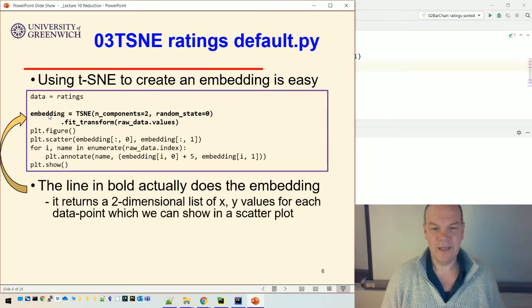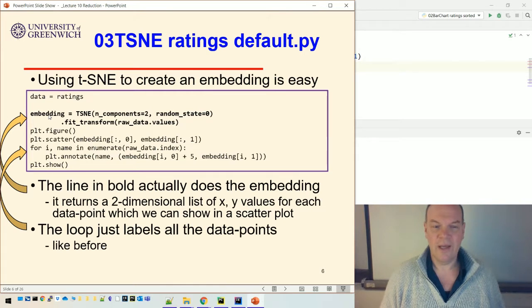Okay, so the line in bold actually does this t-SNE embedding, returns a two-dimensional list of XY values, which we can then show in a scatterplot. And in order to understand which of these dots are which in the scatterplot, we can label them, and that's just what this code does. So this labels the code by putting the name of that product next to its dot in the two-dimensional space.